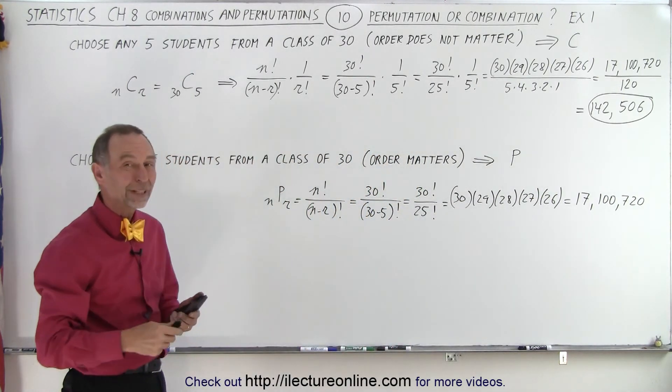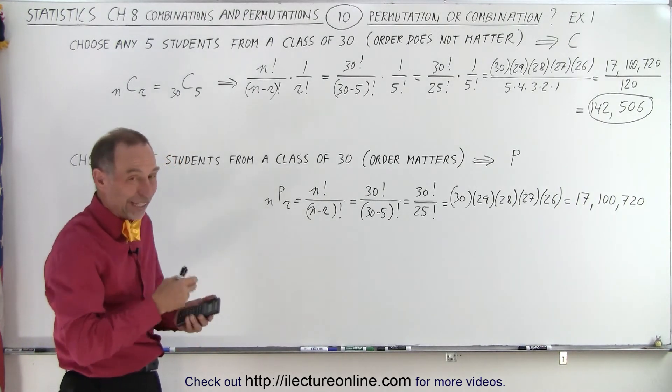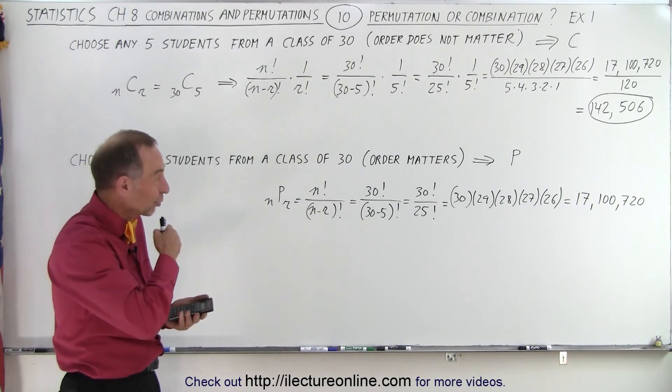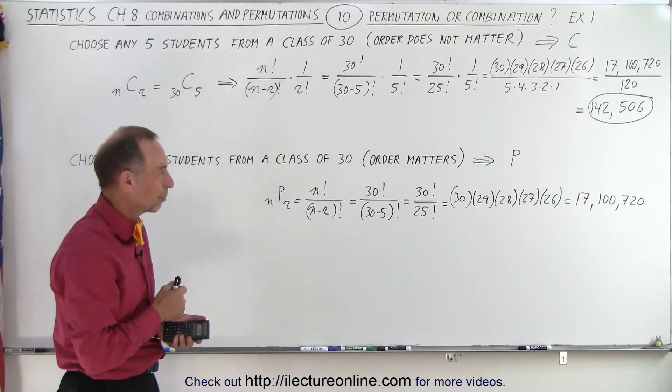So if the order does matter, you have 120 times as many possibilities of pulling 5 students out of a classroom. Because for each 5 students, there's 120 different ways you can do it if the order matters, and that's why it's such a much bigger number.